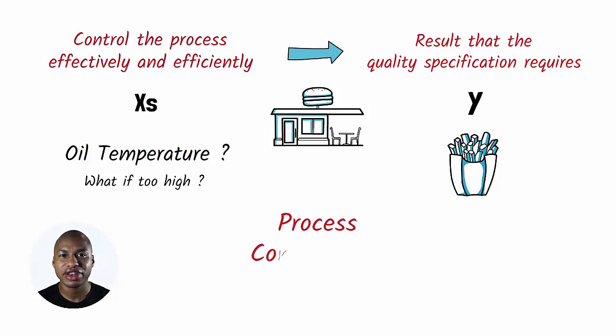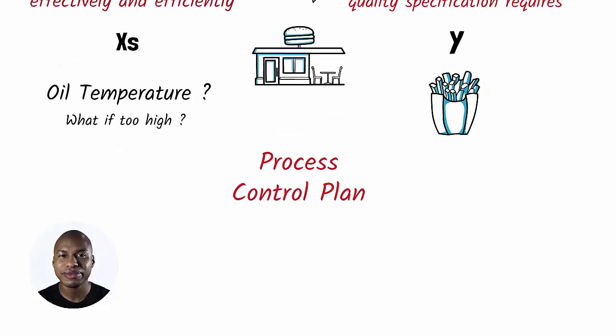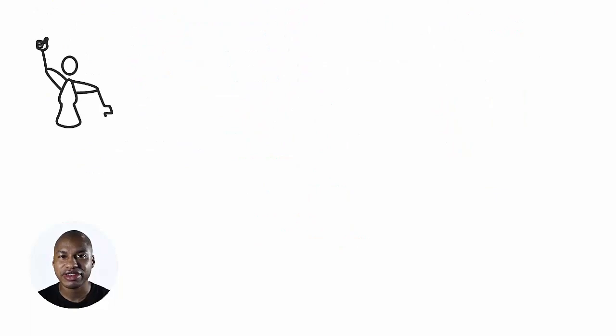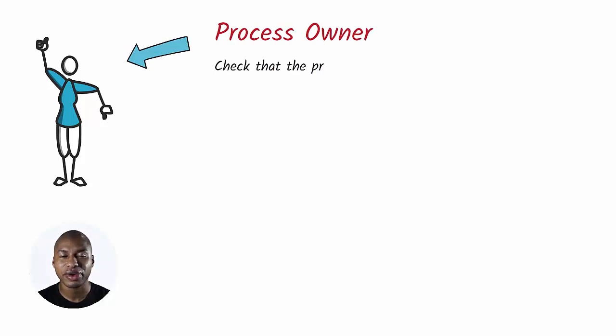To answer these questions, there is a specific tool called process control plan. A process control plan is a tool that clearly defines who the process owner is. The process owner must check that the process is always running correctly.